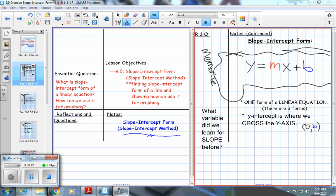Okay, welcome back. So our essential question is, what is slope-intercept form of a linear equation? So what is this form of a line? And how can we use it for graphing? Again, this is going to be our fastest way to graph something as long as it's in slope-intercept form. And that's what this next page is about. It's teaching us what slope-intercept form is.